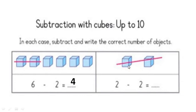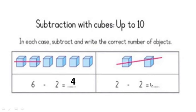There are 2 objects and the sum is 2 minus 2. I have to cut all 2 objects. Are there any objects remaining? No. So if I want to minus 2 from 2, the difference is 0.